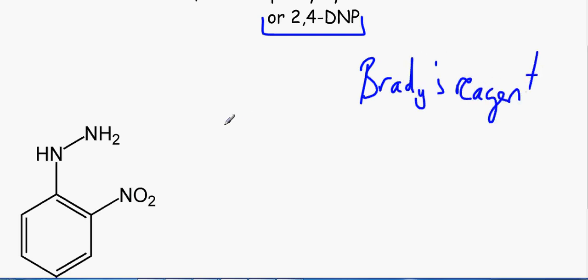And we can mix it in with a solution of methanol and sulphuric acid to make this fantastic reagent called Brady's reagent. So Brady's reagent is a mixture of 2,4-DNP, methanol and sulphuric acid, H2SO4.